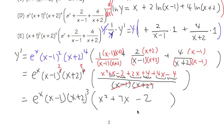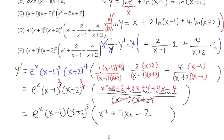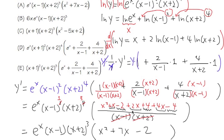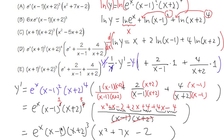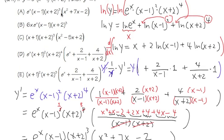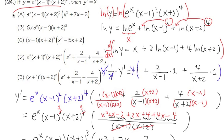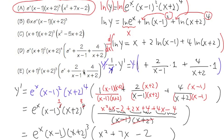So the final answer is e to the x times x minus 1 times x plus 2 to the third power, times the quantity x squared plus 7x minus 2, all over x minus 1 times x plus 2. Scrolling up, this matches exactly answer choice A. Answer choice A is the correct one — not D, which was a tricky distractor. Make sure your answer matches one of the given choices exactly.